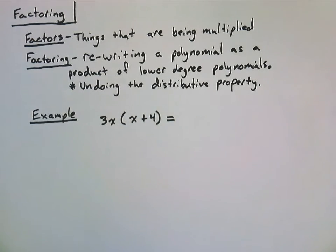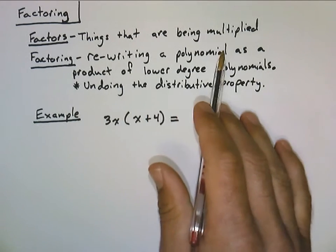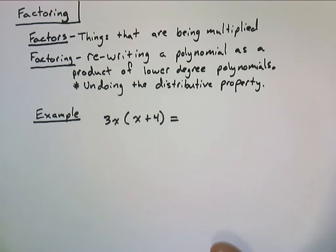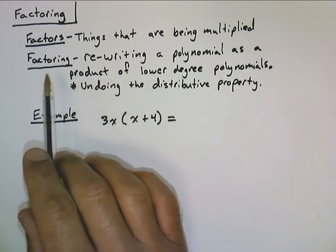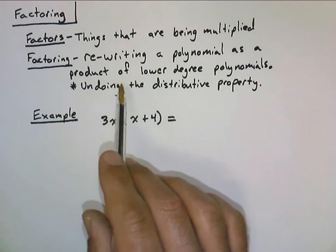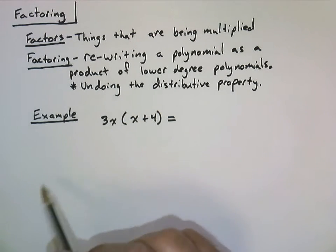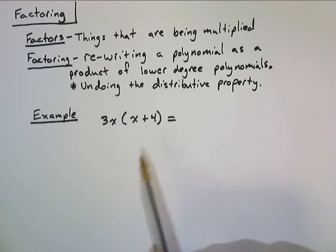Hello again, this is Mr. Vigil. Today we're going to be talking about factoring polynomials. The idea of factoring is that factors are things that are being multiplied, as opposed to terms. Terms are things that are being added together. The act of factoring is just rewriting a polynomial as a product of lower degree polynomials, and we're going to do this by undoing the distributive property.